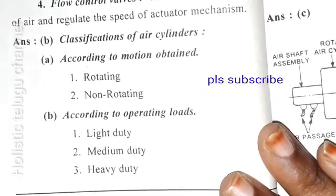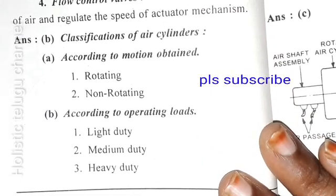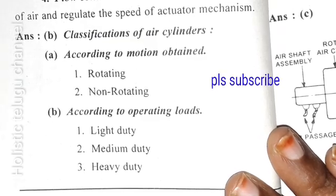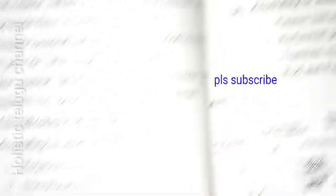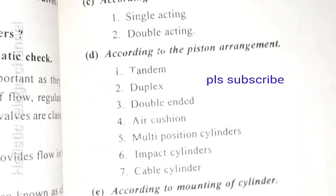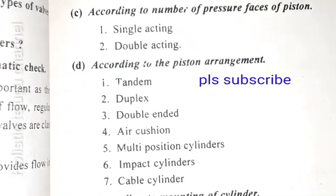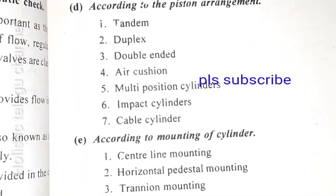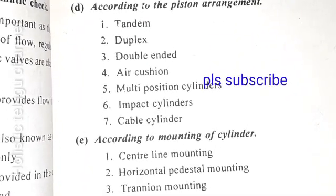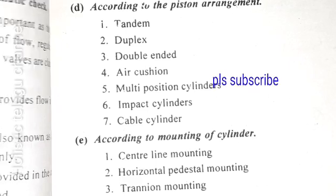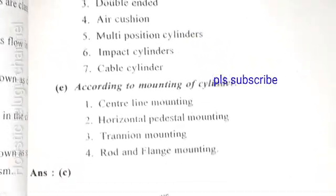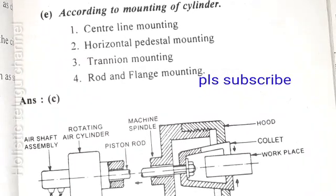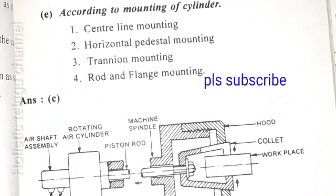Classification of cylinders: according to the motion obtained - rotating and non-rotating. According to operating loads - light duty, medium duty, heavy duty. According to the number of pressure phases of pistons - single acting, double acting. According to the piston arrangement - tandem, duplex, double-ended, air cushioning, multi-position cylinder, impact cylinder, cable cylinder. According to the mounting of cylinder - centerline, horizontal, trunnion, and rod and flange mountings.